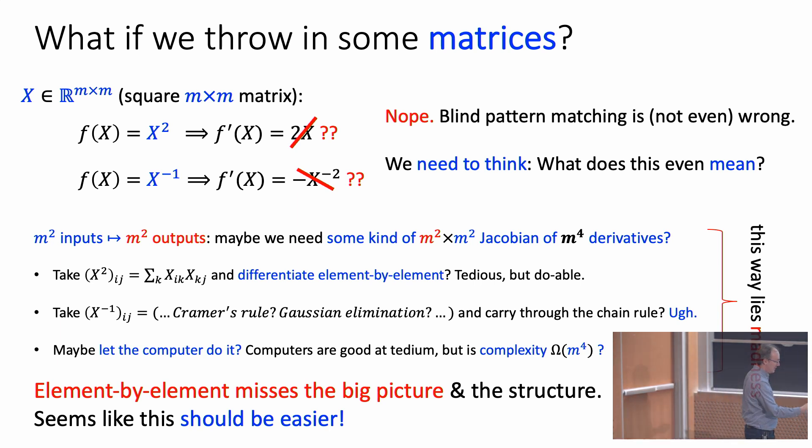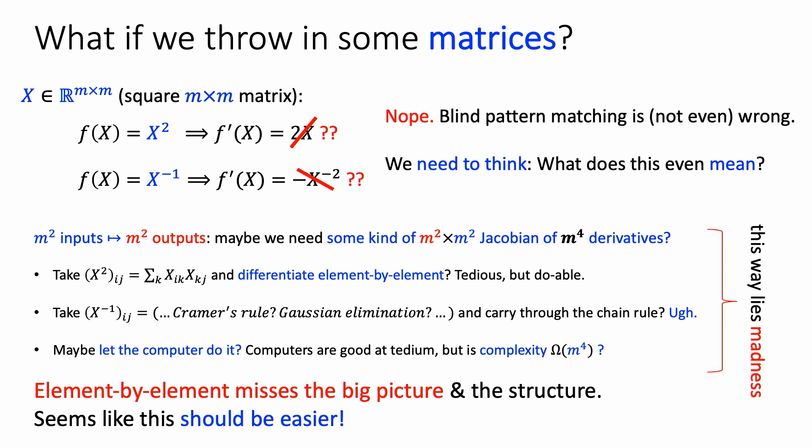You could write out the formula for the product of x with itself and take the derivative of every element — not so crazy for x². But for x⁻¹ you might write out Cramer's rule or try carrying the chain rule through Gaussian elimination, and this does not seem doable by hand. Naively, if there are m⁴ derivatives the cost would be at least m⁴. This direction leads to madness — looking at things element by element means missing the structure that this is a matrix inverse.